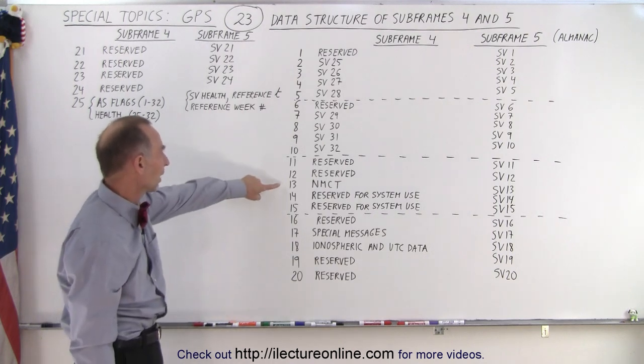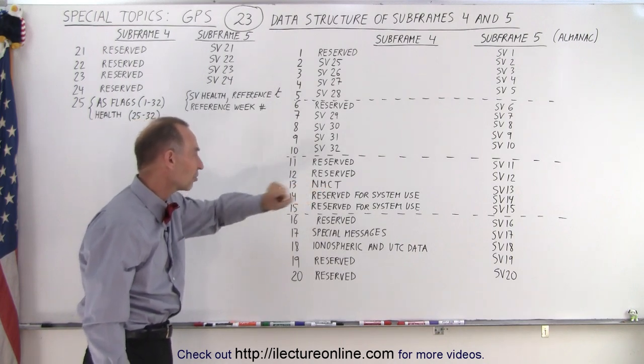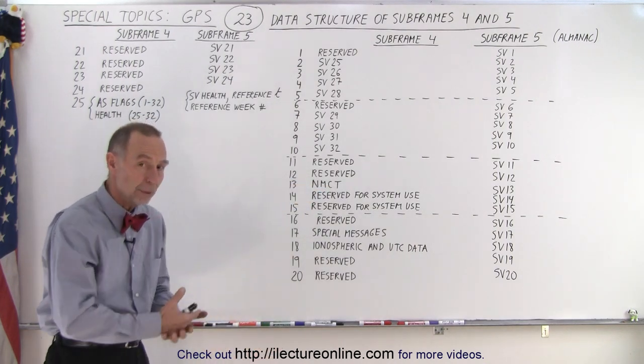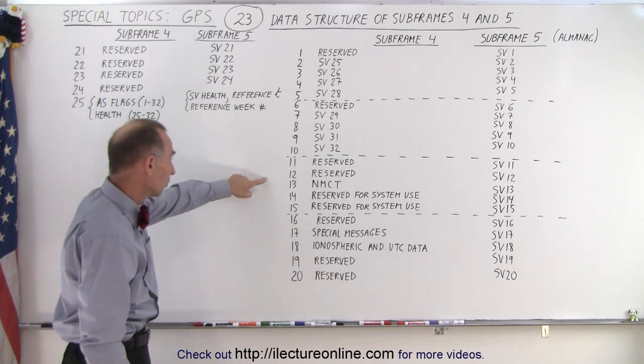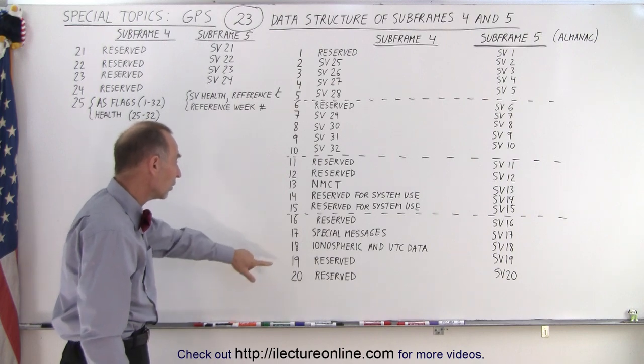What we also have, notice that on subframe 13, we have the navigation message correction table, in case too much time has gone by, we need to make adjustments on the table. And then we have 17, some special messages without the details.